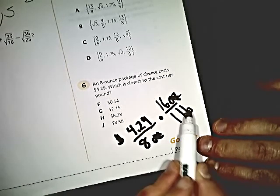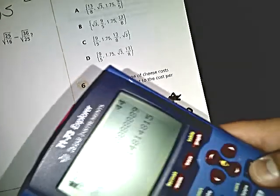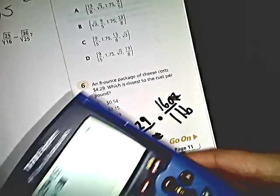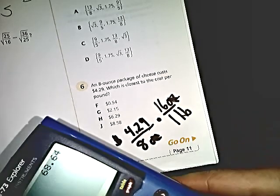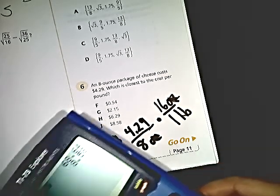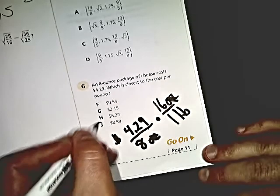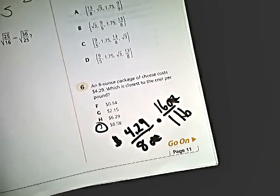This will give me the dollar amount per pound. So I do $4.29 times 16, and then I'm going to divide that by eight. I get $8.58, which makes a lot of sense because eight ounces is half of 16, and $4.29 is half of $8.58.